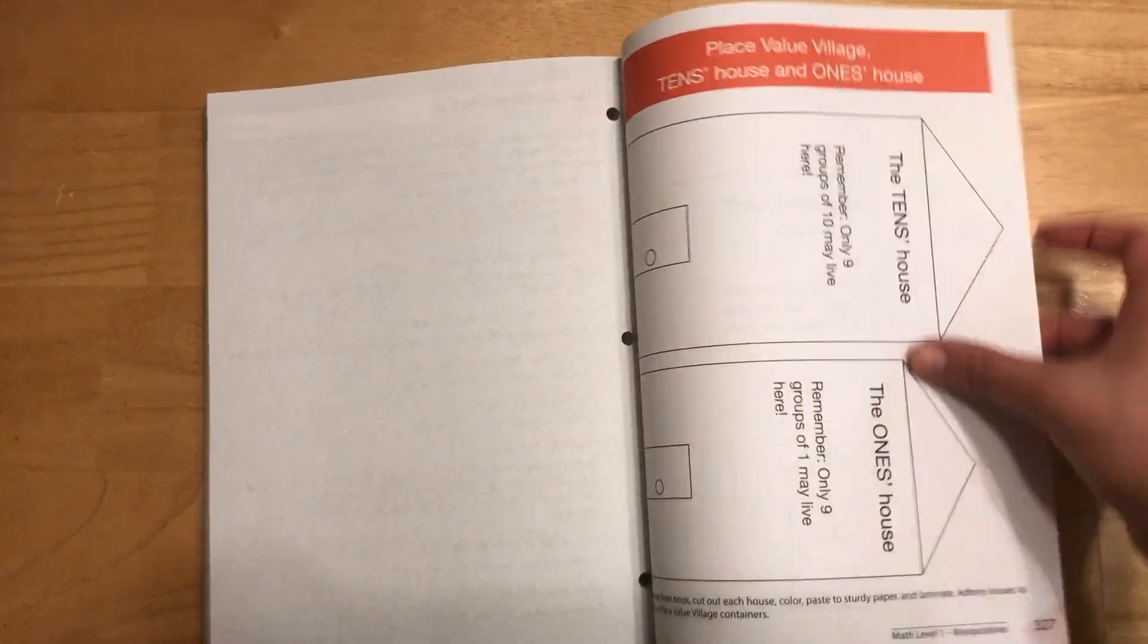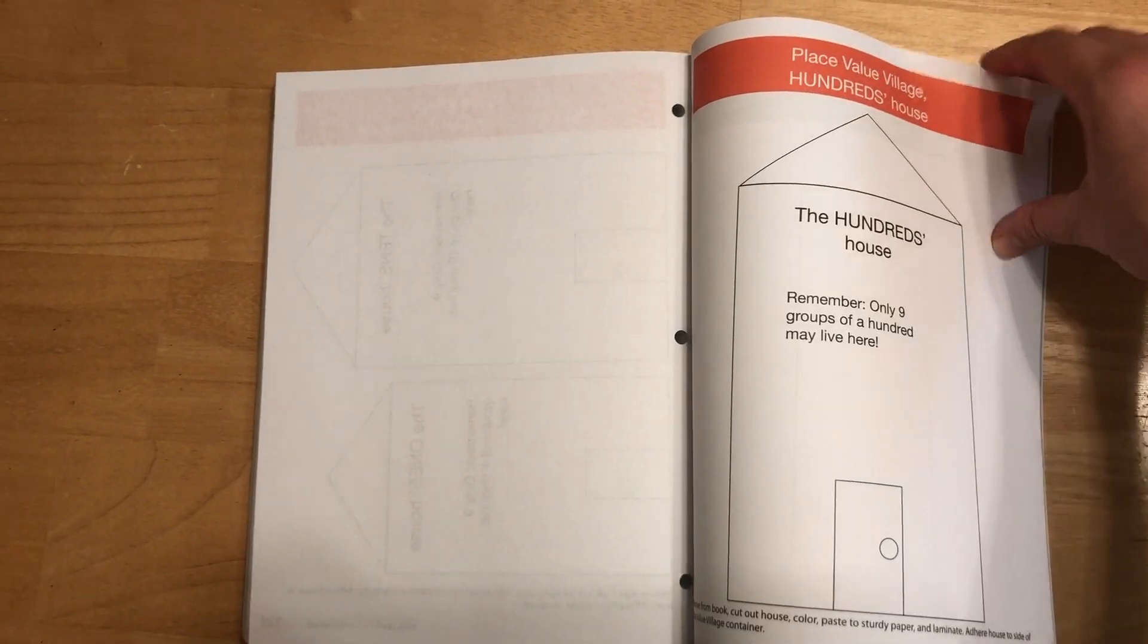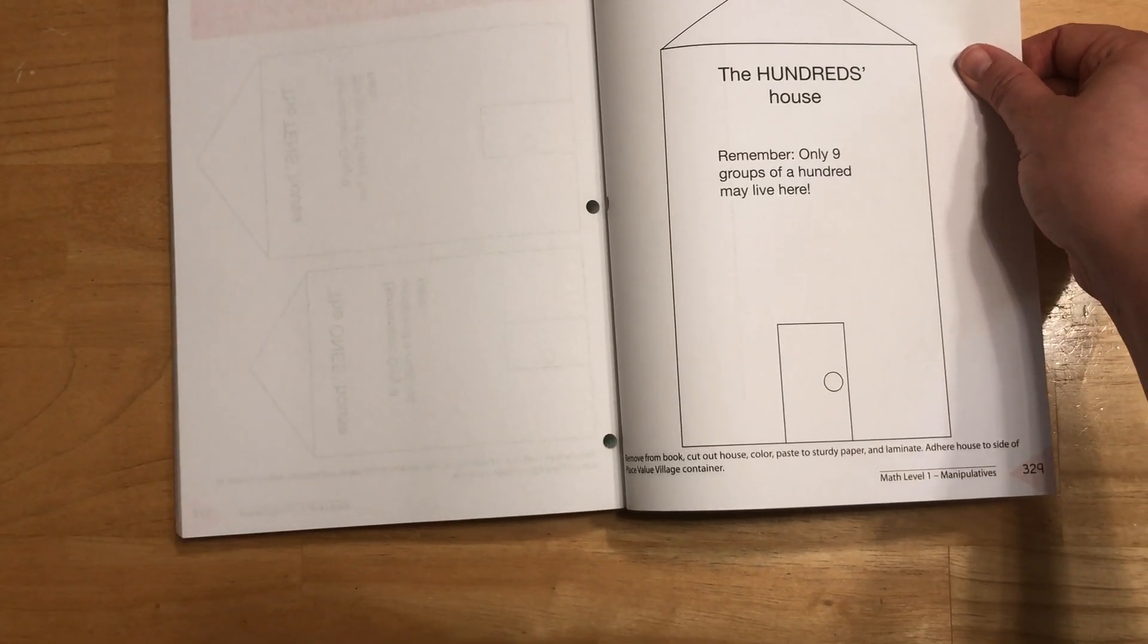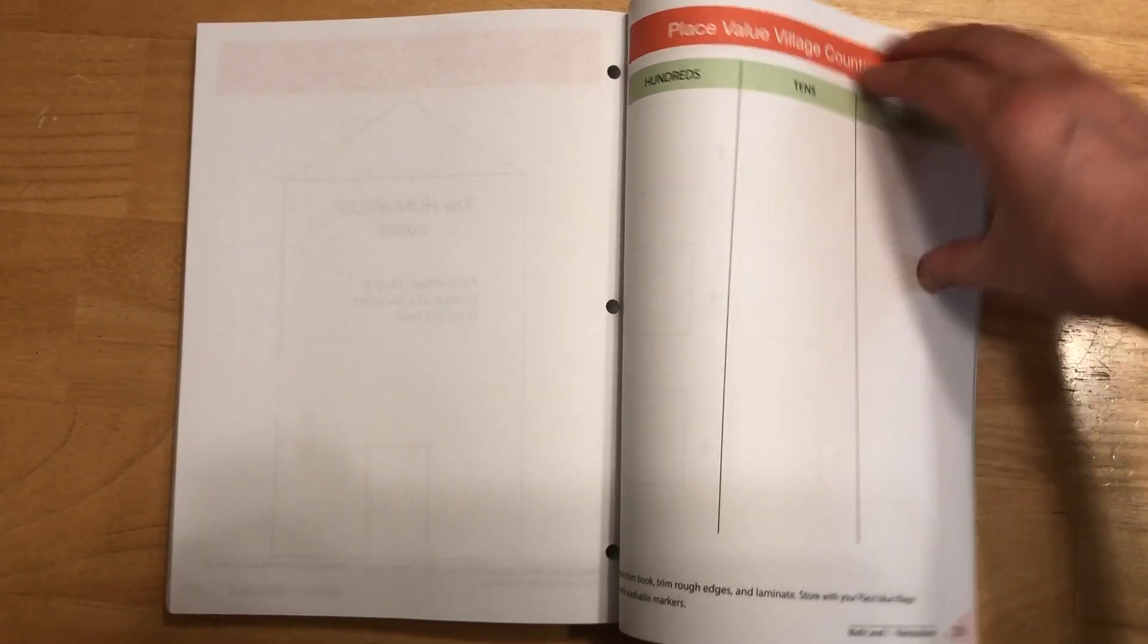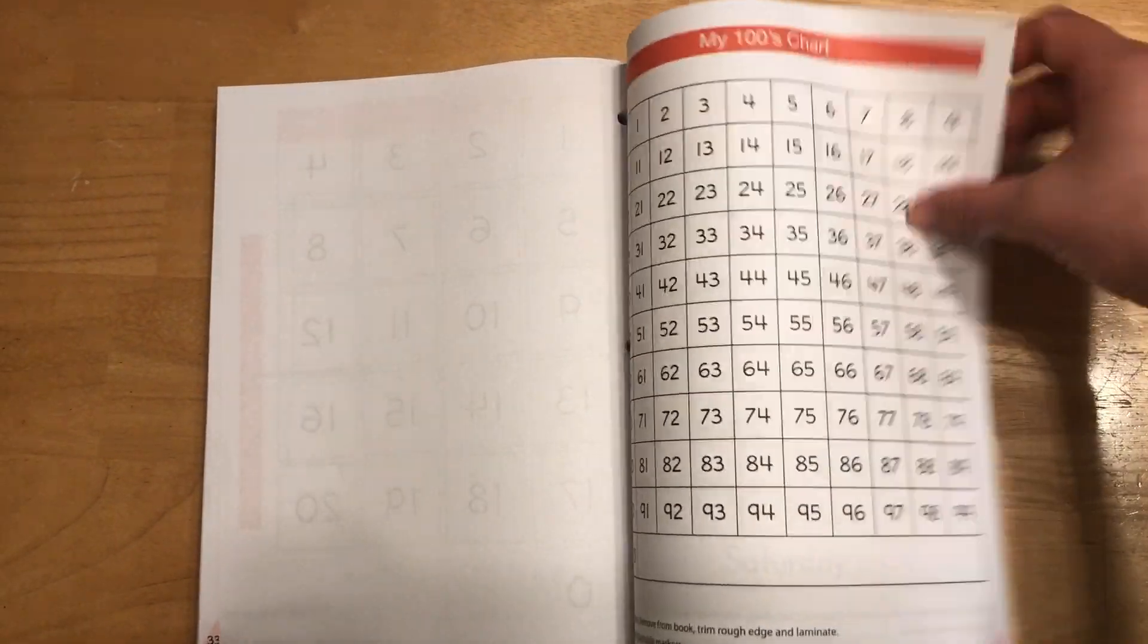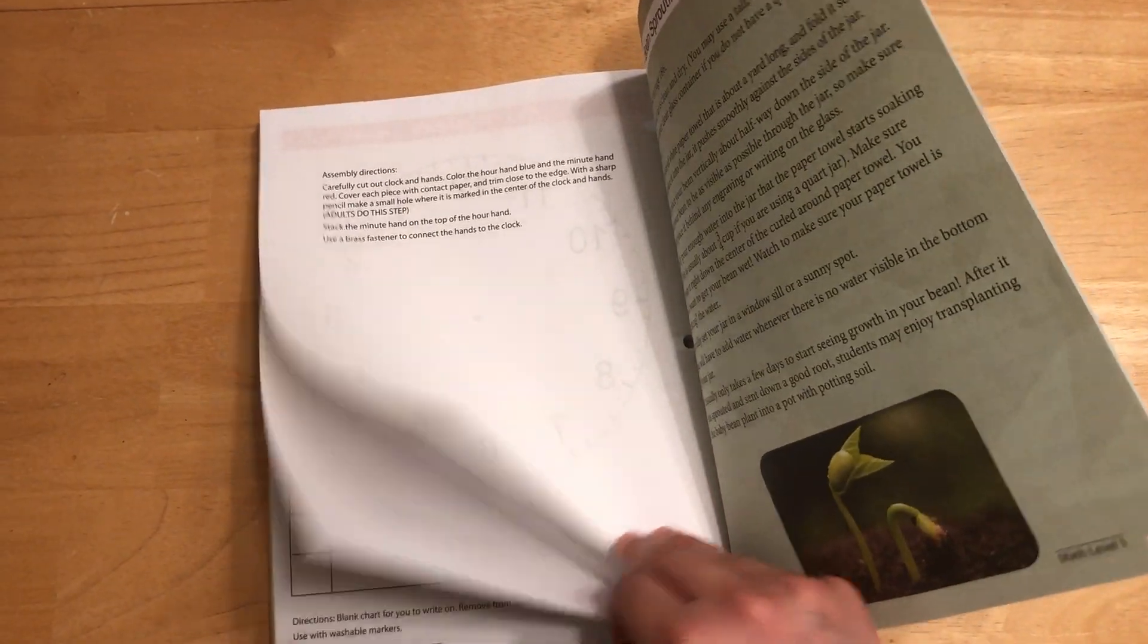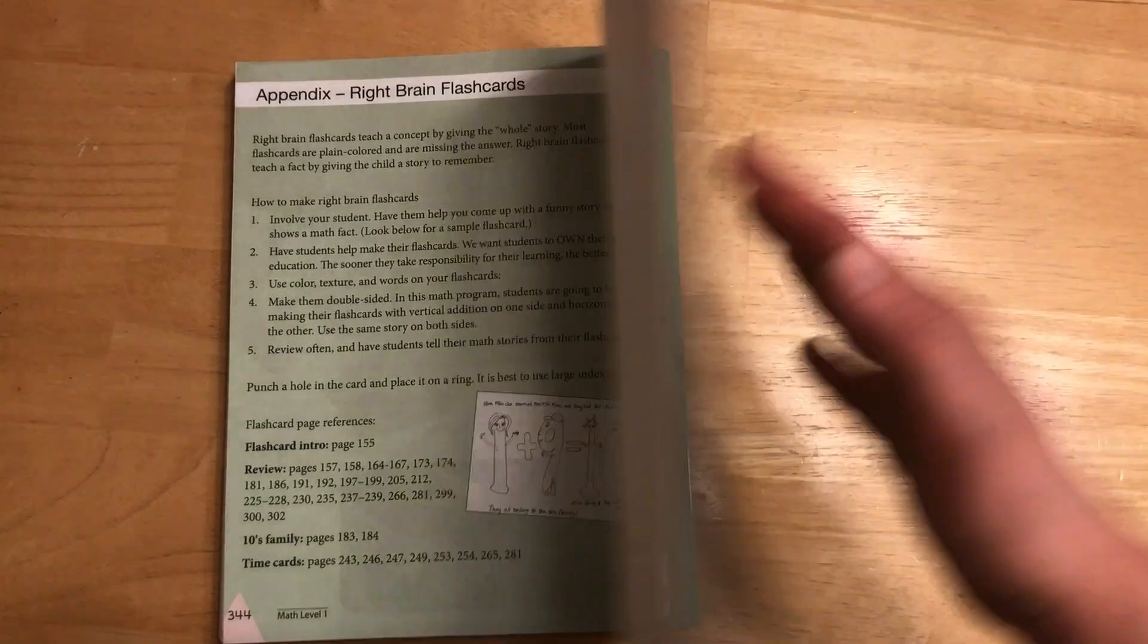Here's the manipulatives. Here's the tens house and the ones house from the place value village. You remove them, cut them out, color, laminate. Here's the counting mat, an addition mat, little cards you cut out to go with it, hundreds chart, clock, days of the week. And then here's how you do the sprouting beans, instructions and some other flashcards.